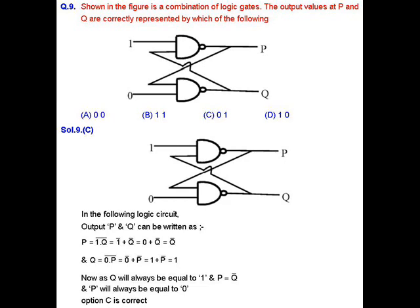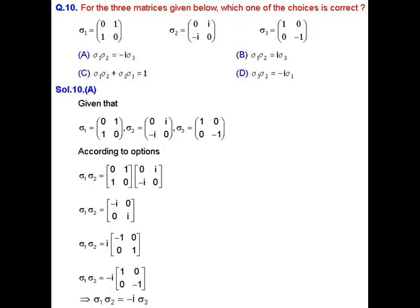Simplifying (1 · Q) bar using De Morgan's theorem gives 1-bar plus Q-bar, which equals 0 plus Q-bar, so P equals Q-bar. Similarly, Q can be defined as (0 · P) bar, which simplifies to 1 plus P-bar, which equals 1. Since Q always equals 1 and P equals Q-bar, P will also always equal 0. So the correct answer is option C.